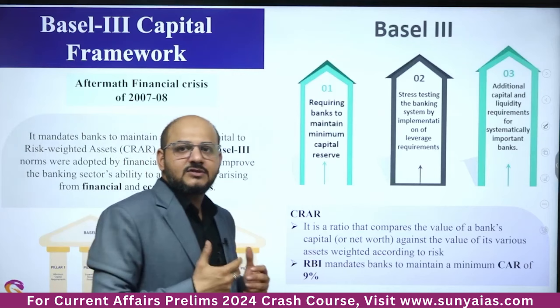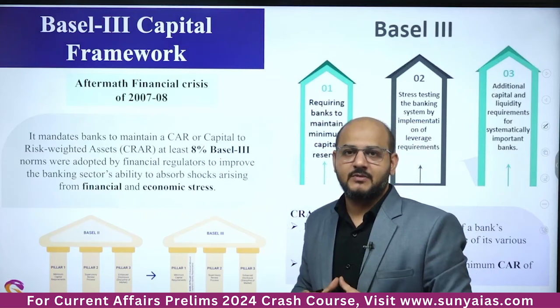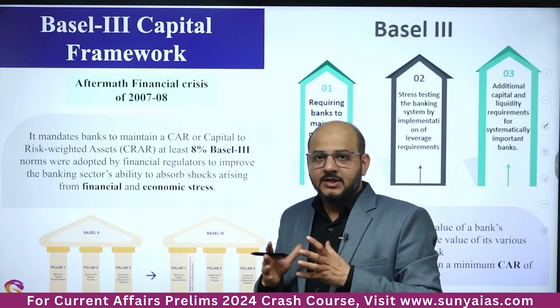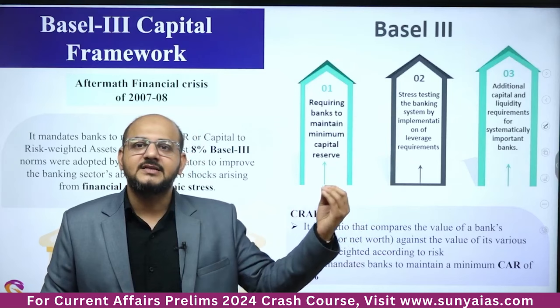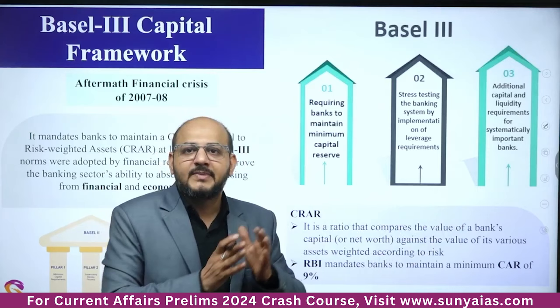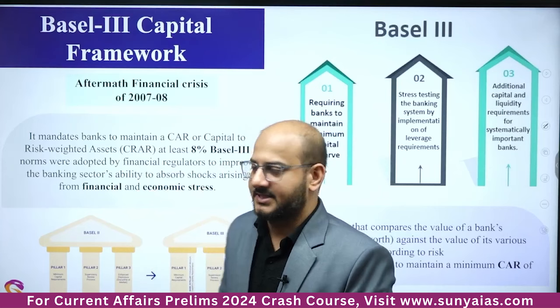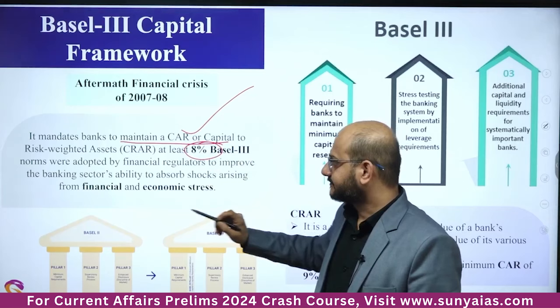Basel III Capital Framework — post the 2008–09 financial crisis and subprime crisis, the Basel Committee came up with capital adequacy norms for how financial institutions should operate. Capital adequacy means the ratio of a bank's net capital worth against its various assets weighted according to their risks. The Basel Committee mandates banks to maintain a capital adequacy ratio (CRAR — Capital to Risk-Weighted Assets Ratio) of at least 8%.